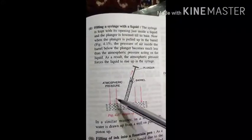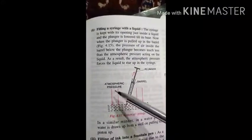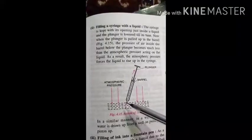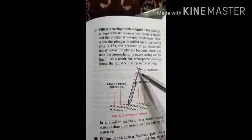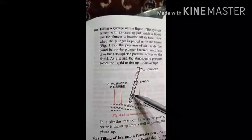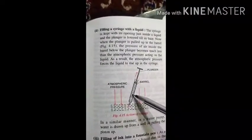Atmospheric pressure acts on the surface of the liquid like this. So whenever you have to fill the syringe, what do you do? We pull the plunger. When we pull the plunger, the air inside the barrel comes